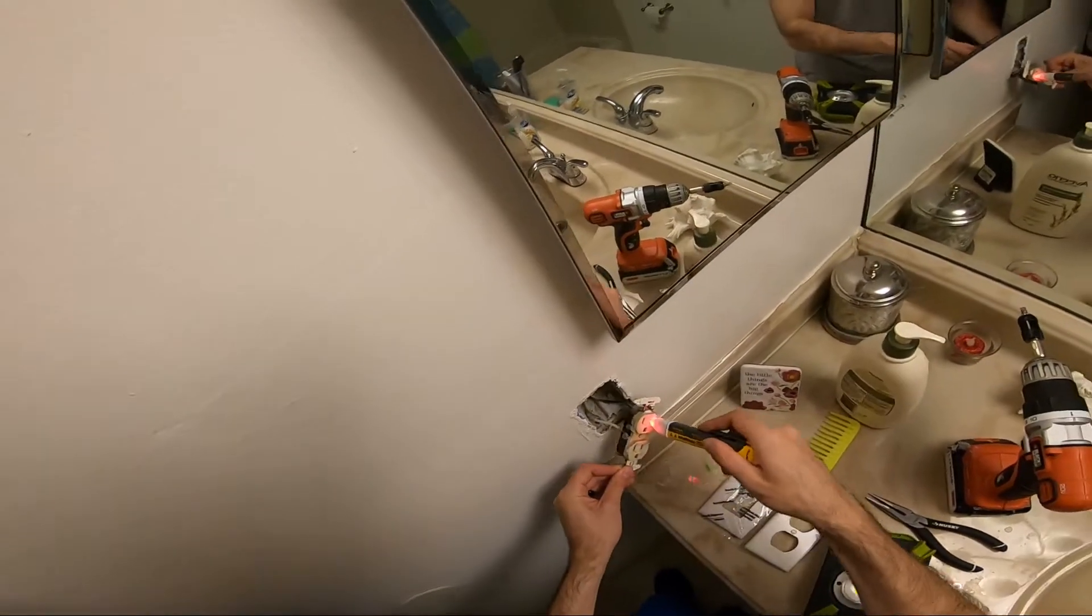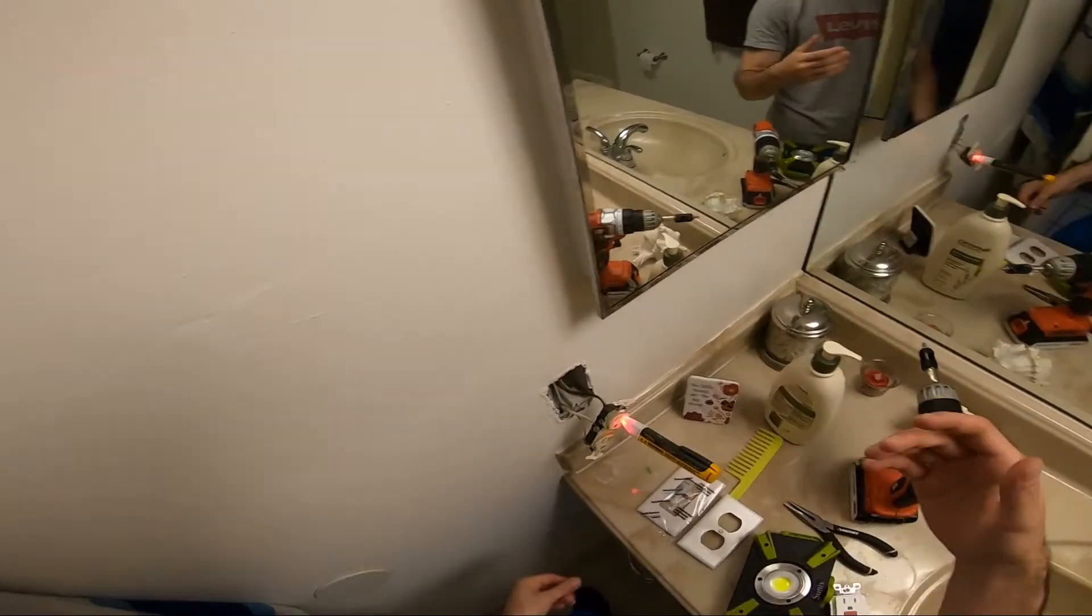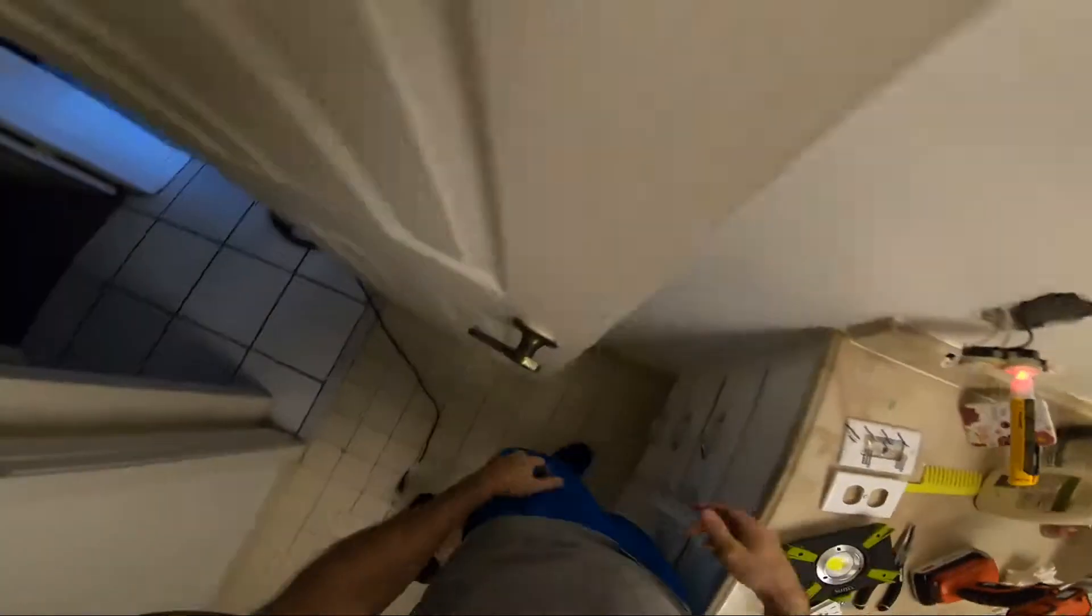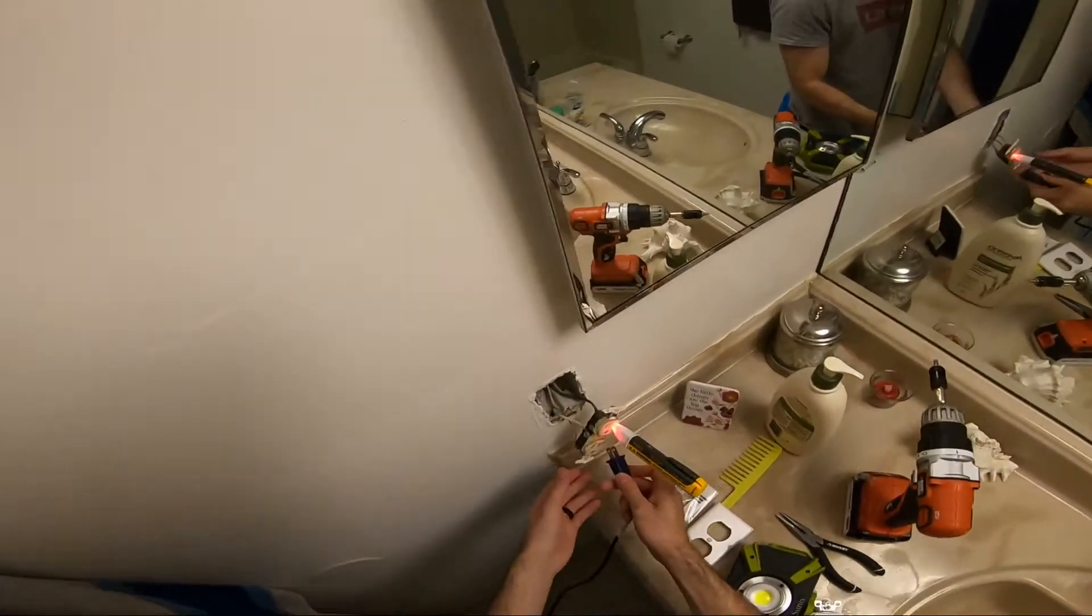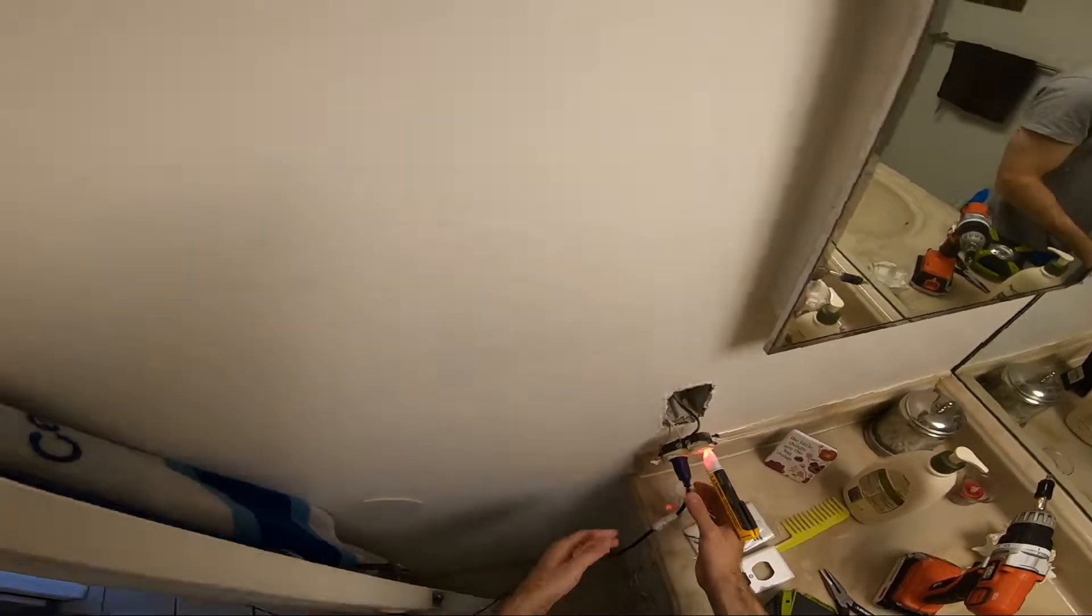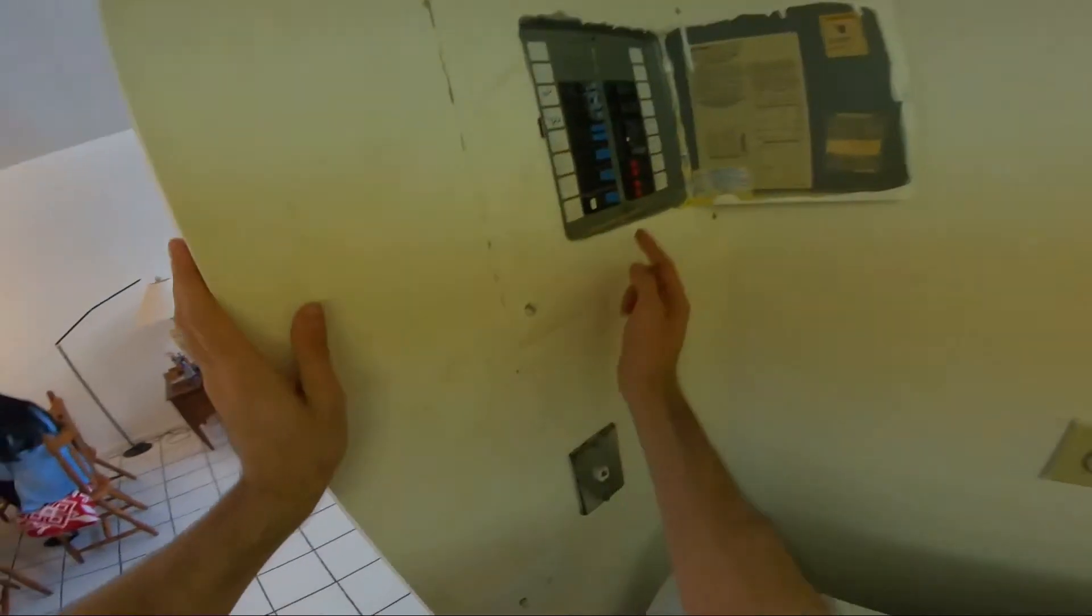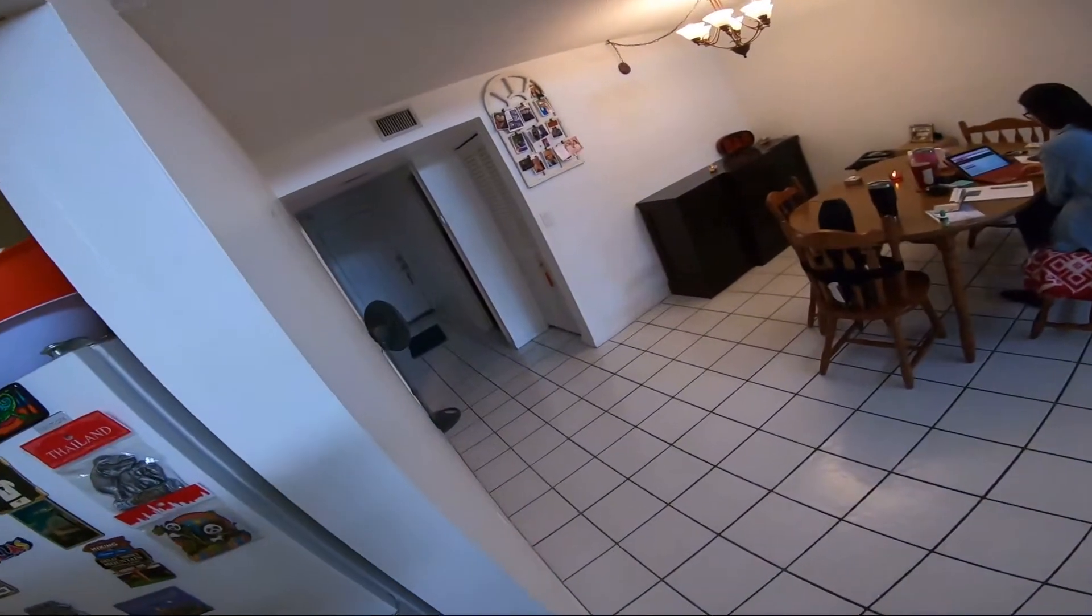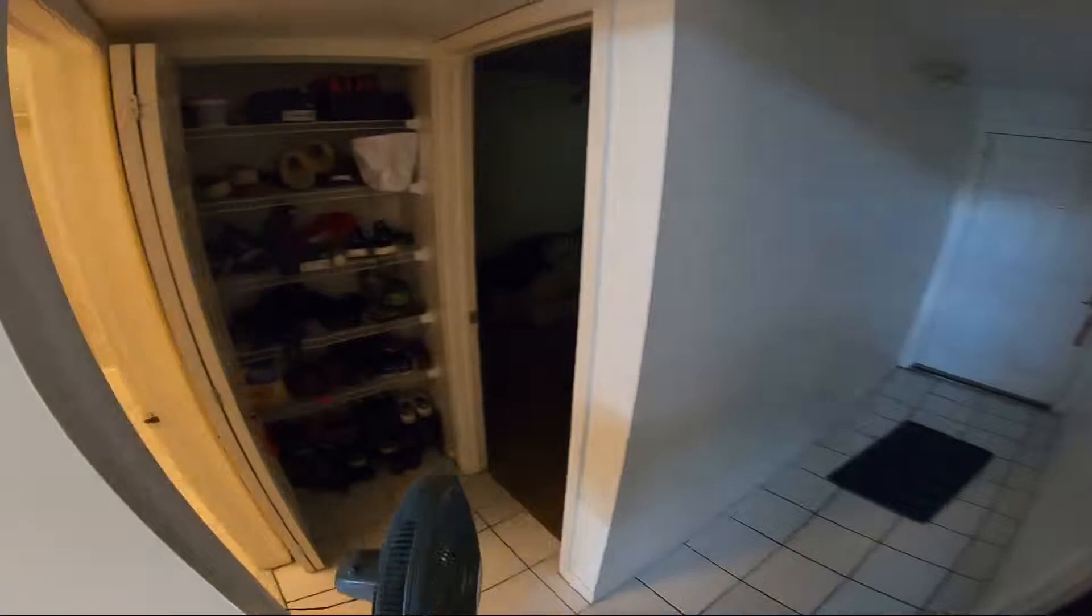But basically what you want to do is you want to go to your fuse box. Unless it's labeled really well, you probably want to have one of these, or you can always just plug in something, right? So right now this fan's running. And then once I go ahead and find the correct fuse, which I already did, and it's this big one right here. See, the fan just turned off and the voltmeter just turned off as well.